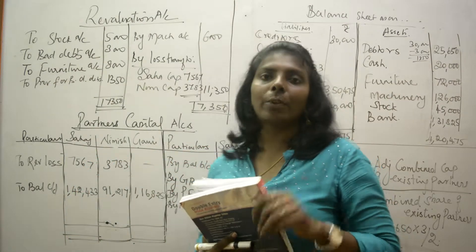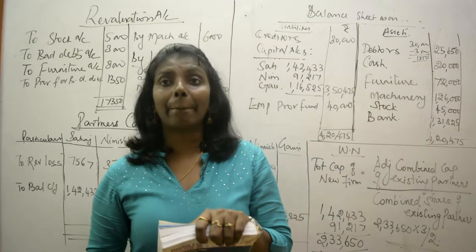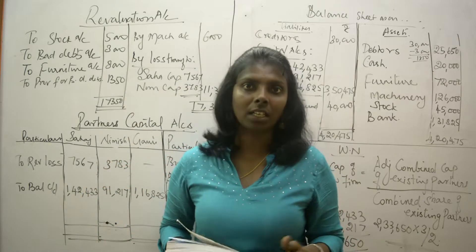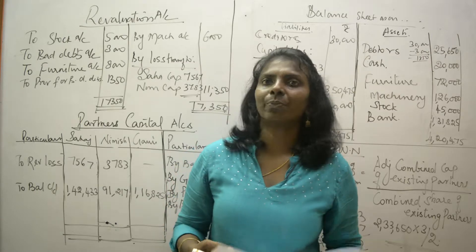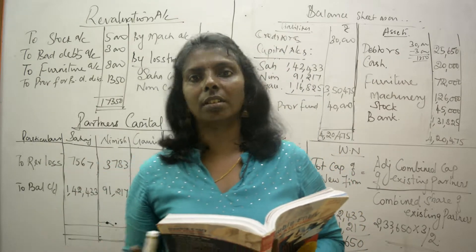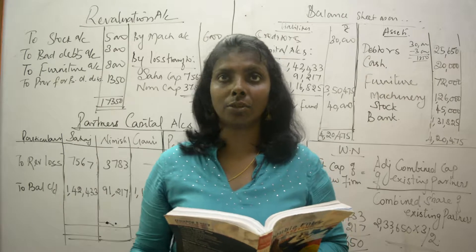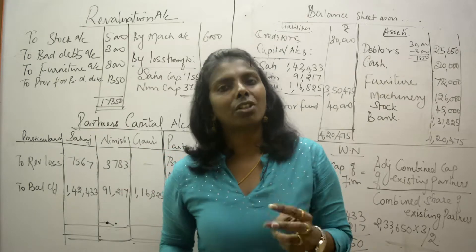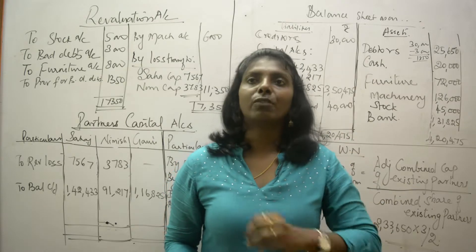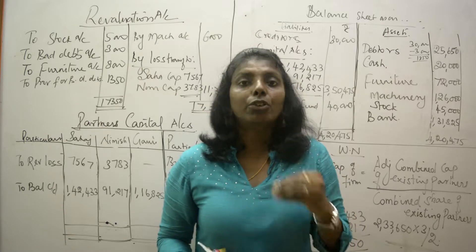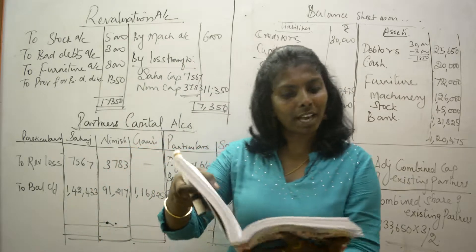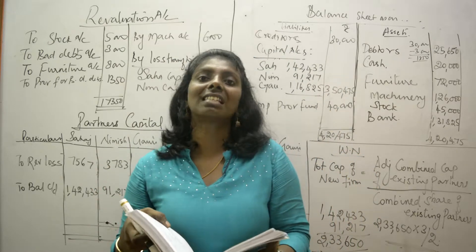In this video we're going to see Adjustment of Capital Method Case 2. The last video explained Case 1 in partnership admission. To identify which case it is: if the incoming partner's capital is given, it's Case 1. If the incoming partner's capital is missing and you need to find it based on the existing partners, that is Case 2.